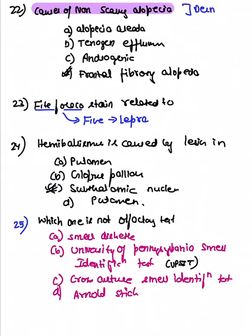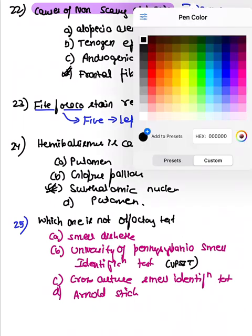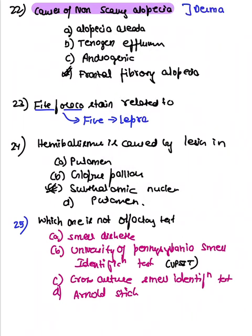The answer was frontal fibrosing alopecia for the non-scarring alopecia question. For the leprosy stain question — to remember, 'fight' looks like five, and 'lepra' has five letters — five percent H2SO4 is used in the Wade-Fite (Gene Nelson) stain for leprosy.